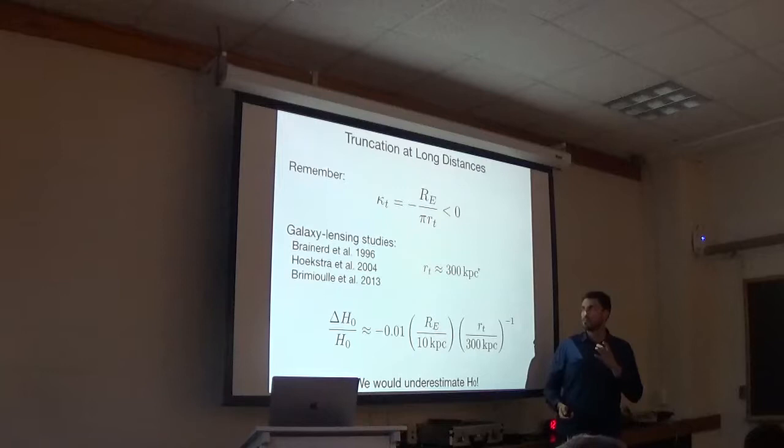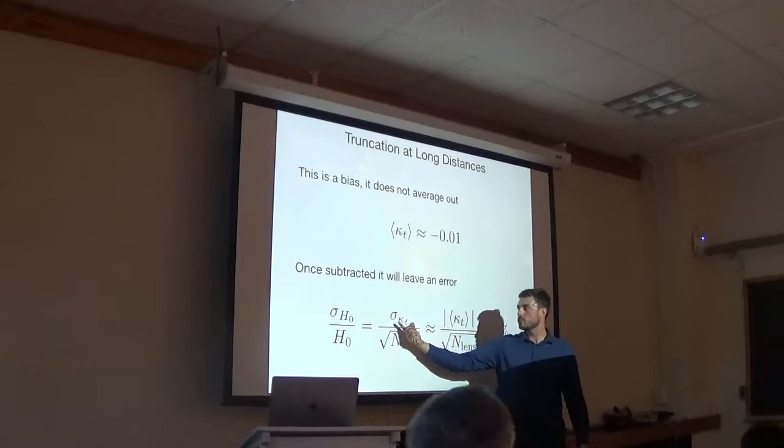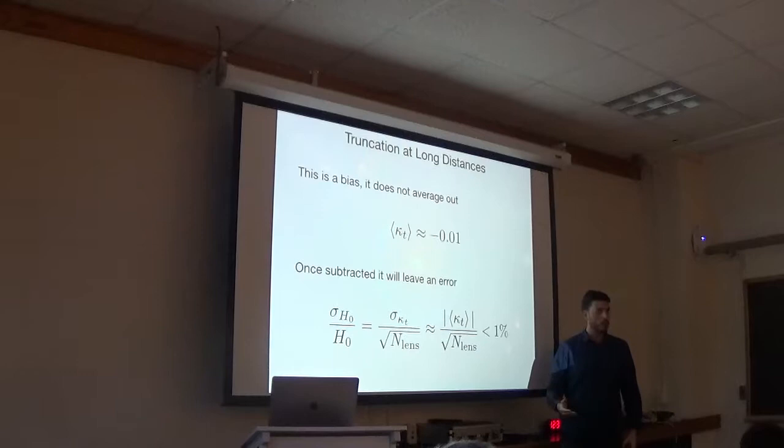So we would underestimate H0 if we don't truncate our lenses at a physical distance. And I want to point out that this is a bias. This doesn't average out over many lenses. It goes in the same direction for all of them. But once you subtract it, you're left with a little bit of an error, right? Since this distribution of kappa will have some width. Now if you assume the width is comparable to the magnitude, this is 1%. As long as you have enough lenses, this will hopefully be sub-percent.